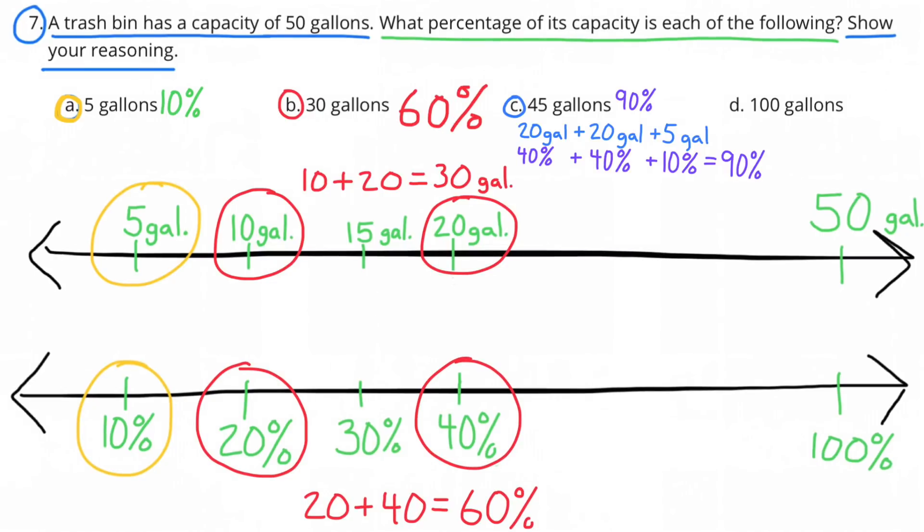C. 45 gallons. 45 gallons is the same as 20 gallons plus 20 gallons plus 5 gallons. So really we're adding 40% plus 40% plus 10%, and that equals 90%. So 45 gallons represents 90% of the capacity of a 50 gallon trash bin.